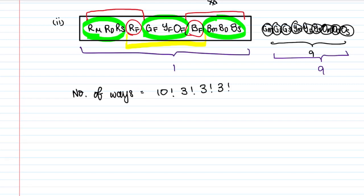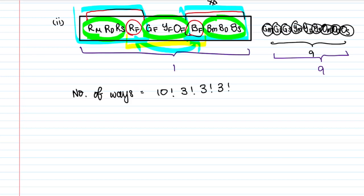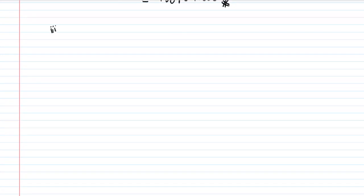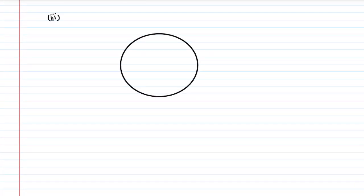That's a tricky part — you need to draw it out and highlight what you're looking at. Part three is actually one of the simpler parts. Let's draw a circle because all 20 cards are arranged in a circle, and we need to find the probability that no two father cards are next to each other.